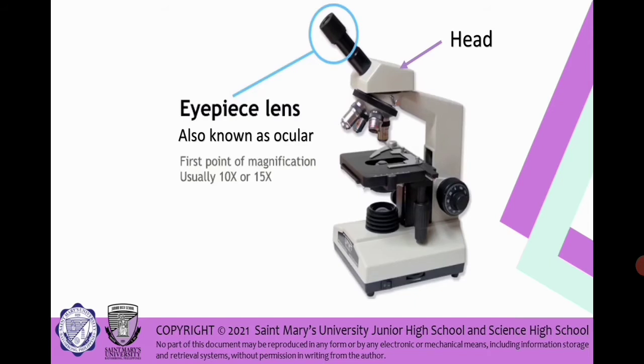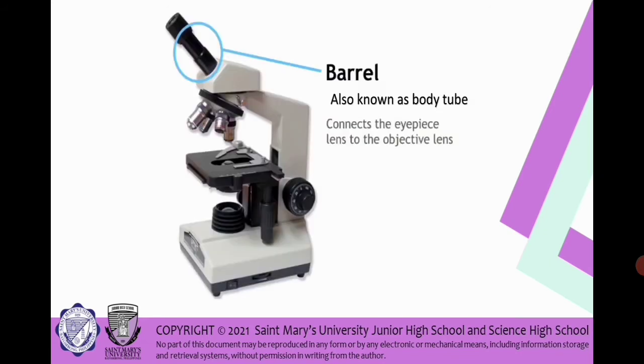We have the head. That is the part of the compound light microscope, the head part. And we have the eyepiece lens, also known as ocular or the first point of magnification that is usually 10 times or 15 times. Next we have barrel. Barrel is also known as the body tube and it connects the eyepiece lens to the objective lens. Next we have the arm. The arm raises the objective lenses above the stage and also used for carrying the microscope.